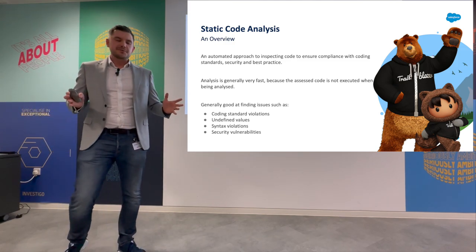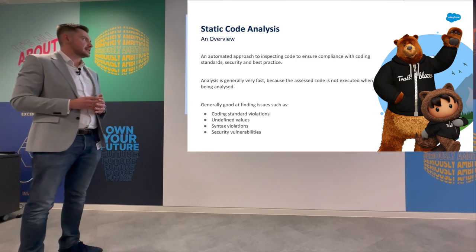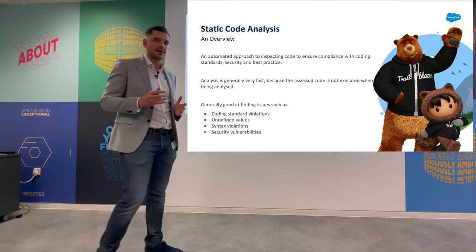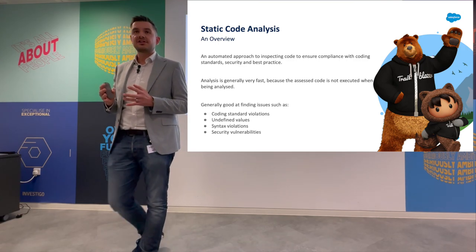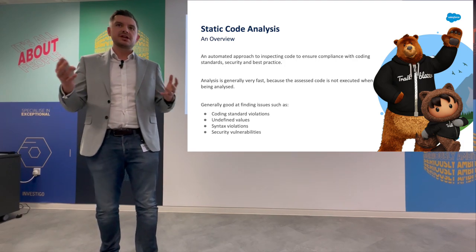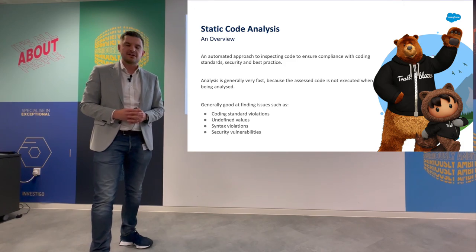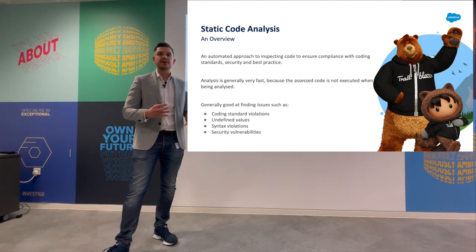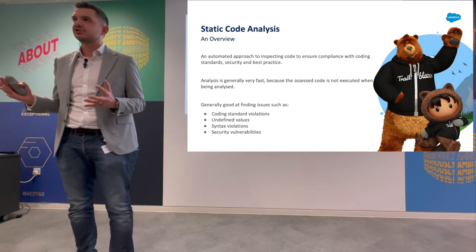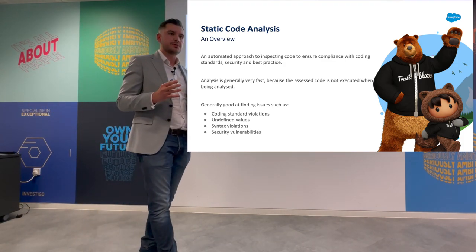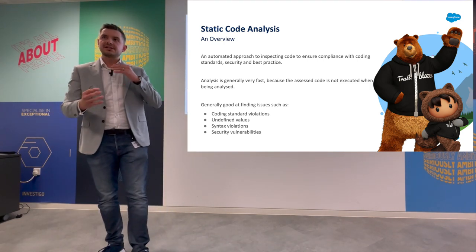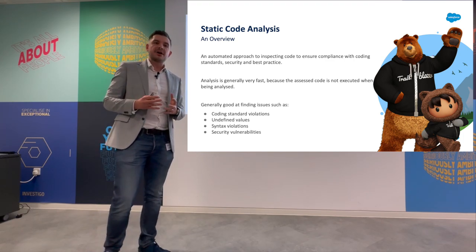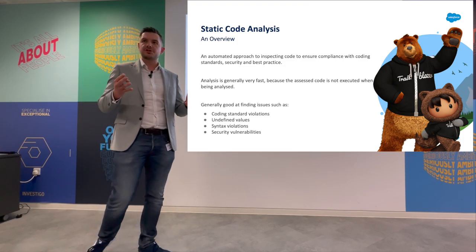Static code analysis is an automated approach to inspecting code to ensure compliance with coding standards, security, and best practices. It's generally very fast because the assessed code is not executed when it's being analyzed. Static code analysis is used when developing, or in line with CICD tools when deploying. It helps keep us aligned with coding practices — industry standards or specific in-house practices. It takes the file of code you've written, scans it, and tries to find what we call violations. Those violations occur as a result of rules written for the tool you're using.